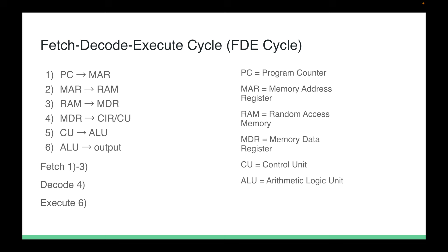The program counter tells the CPU what address in RAM to access next. The memory address register sends an address to the RAM to be accessed. The RAM holds current program data as address and data pairs. The memory data register receives data from RAM and passes it to the control unit, where it is decoded and sent to the ALU. The control unit does decoding and controls the overall process, called the fetch-decode-execute cycle or FDE cycle. It's also called the machine instruction cycle.